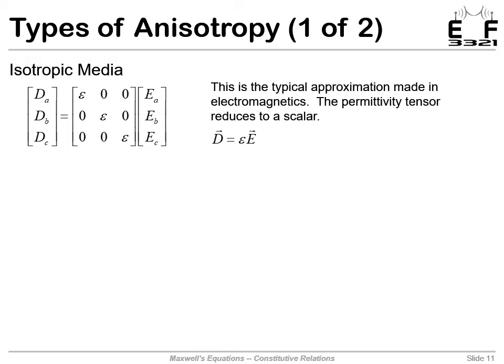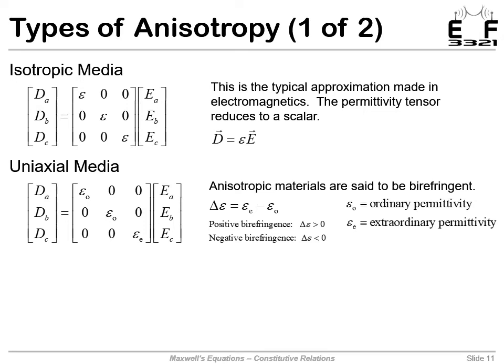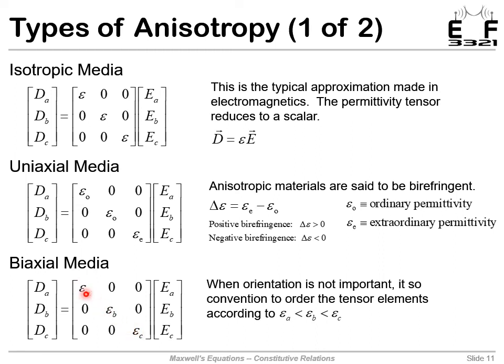We also have the case where in two directions the permittivity is one value and in a third direction it's something different altogether. The two similar directions are called the ordinary permittivity and the different one is called the extraordinary permittivity. The difference between the ordinary and extraordinary permittivity is called birefringence, or the strength of the anisotropy — it can be positive (positive birefringence) or negative (negative birefringence). This is called a uniaxial medium. In the most general setting, all three numbers are different, and that's called a biaxial medium, with the convention of placing the smallest number first and the largest last.